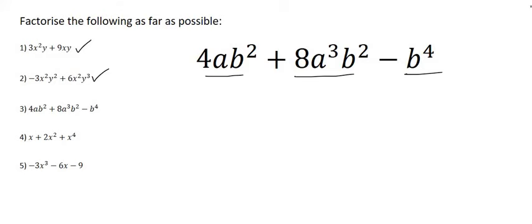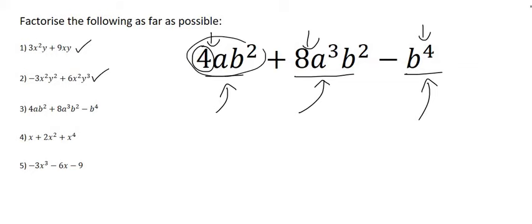Here we have three terms. There is no number that can go into all three of them, so we can't take out any numbers. You could have taken out a 4 if it were only the first two terms, but the third term would be excluded. We can't take out an a either, because the third term doesn't have one. So we can only take out a b. The first term has b squared, the second has b squared, and the third has b to the power of 4, so we take out the lowest, which is b squared.